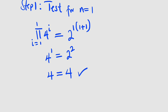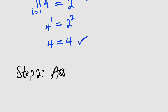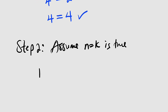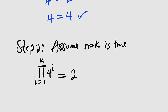Then we go into the second step where we test for n equal to k, where k belongs to the set of natural numbers — it could be any number. We assume that n equal to k is true. The left hand side is the product of 4 to the power of i, i from 1 to k, and the right hand side is 2 to the power of k multiplied by k plus 1.